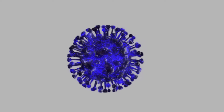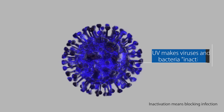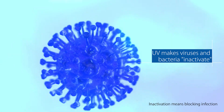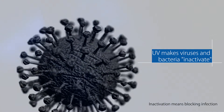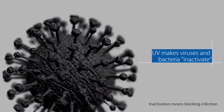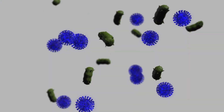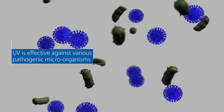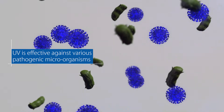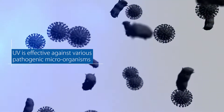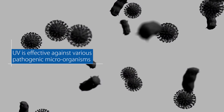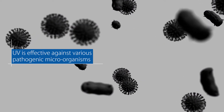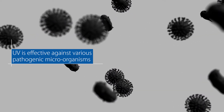Disinfection using ultraviolet light is now drawing increased attention as it is capable of rendering viruses and bacteria inactive. The advantage of using UV light is that it is effective against various pathogenic microorganisms. Unlike disinfectants, there is no need to wipe up or clean after use, and bacteria do not develop resistance to it.